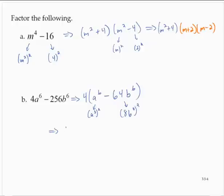So I would have the 4 still, and then I would have a cube plus 8b cube, and then a cube minus 8b cube.